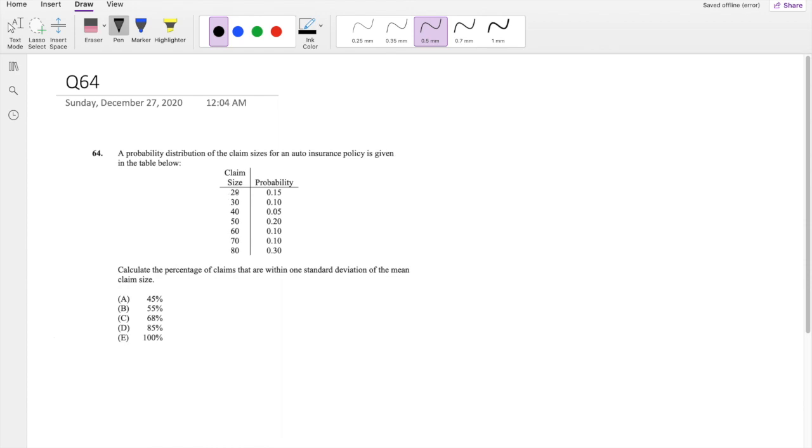So they give you this chart with the claim size and the probability, and then they ask, calculate the percentage of claims that are within one standard deviation of the mean claim size. So we first have to find the standard deviation, or we also have to first find the mean, right?